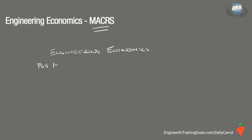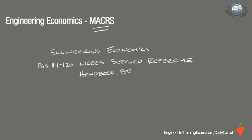Equations, symbols, tables, and information on the various topics covered in Engineering Economics can be referenced on pages 114 through 120 of the NCEES Supplied Reference Handbook, 8th Edition, 2nd Revision.